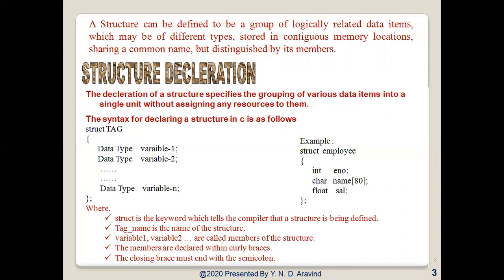Let us see the syntax for structure declaration. The declaration of a structure specifies the grouping of various data items into a single unit without assigning any resource to them. The structure declaration starts with a structure header which consists of a keyword 'struct' followed by a tag. The tag serves as a structure name which can be used for creating structure variables. The individual members of the structure are enclosed between the curly brackets and they can be of similar or dissimilar data types. The data type of each variable is specified in the individual member declaration.